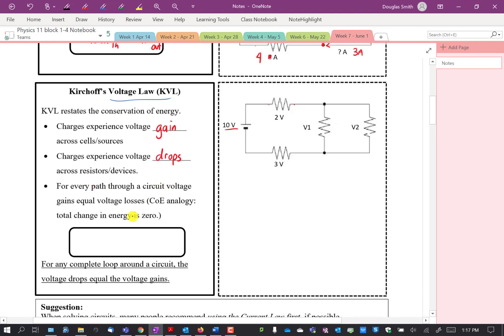So voltage total gain is equal to voltage total drop. I just highlighted this again here because this is how we use this law when analyzing circuits. For any complete loop around the circuit, the voltage drop equals the voltage gain. So let me go through what that might look like.